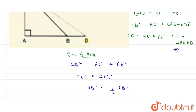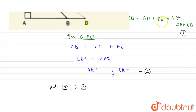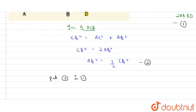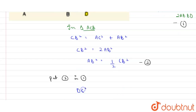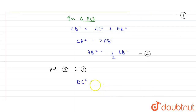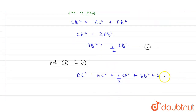Now substitute equation two into equation one. Replacing AB² with (1/2)·CB², we get: DC² = AC² + (1/2)·CB² + BD² + 2·AB·BD.